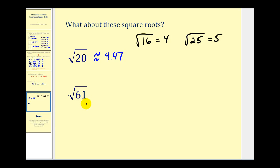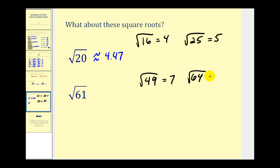Let's try one more. Sixty-one is not a perfect square. The closest perfect square less than sixty-one is forty-nine, and the closest perfect square greater than sixty-one is sixty-four. Since the square root of forty-nine is seven and the square root of sixty-four is eight, the square root of sixty-one must fall somewhere between seven and eight. And since sixty-one is closer to sixty-four, this value will be closer to eight.